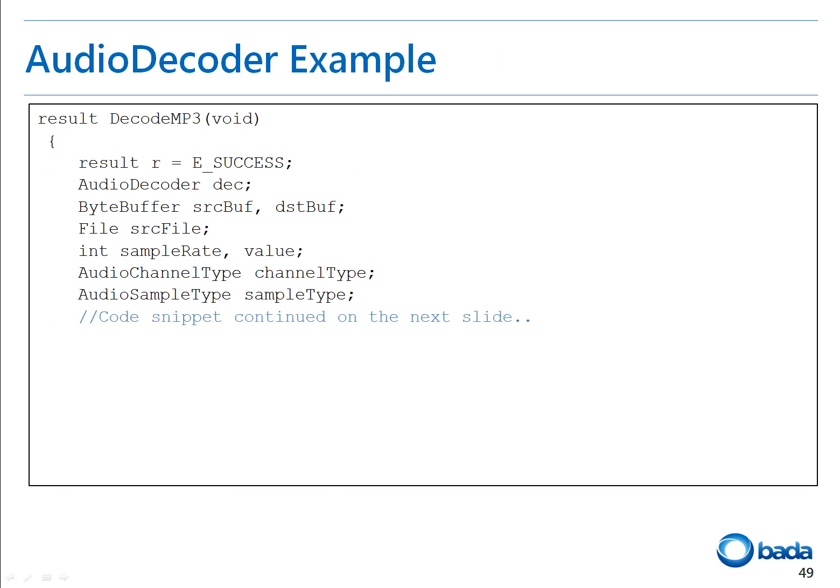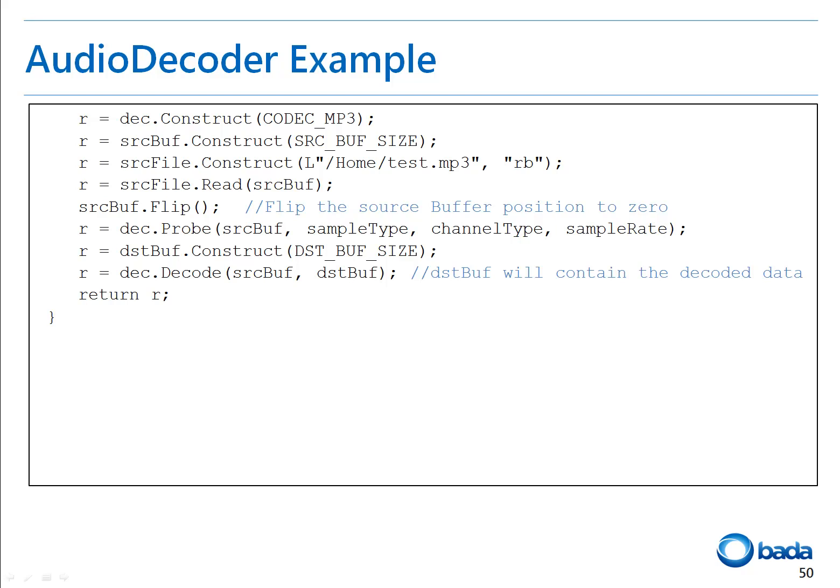Let's look at how to use the audio decoder APIs to decode MP3 data. In line 11, the audio decoder instance is constructed with the MP3 codec type. In line 12, the source byte buffer is created. In line 13, the file instance is constructed with the file path. In line 14, the audio file content is read to the source byte buffer. In line 16, the audio data is checked to see if it can be decoded. In line 17, the destination buffer to hold the decoded data is constructed. In line 19, the audio data in the source buffer is decoded and stored in the destination buffer.